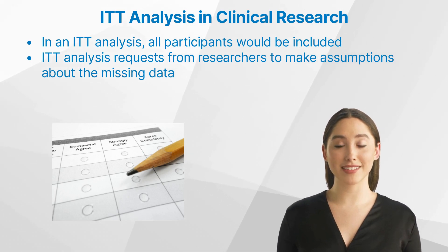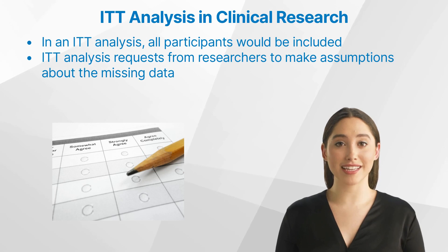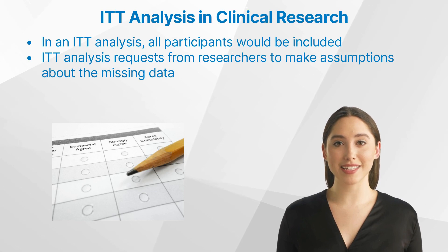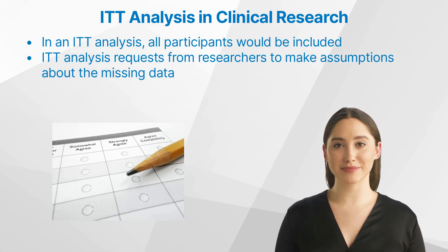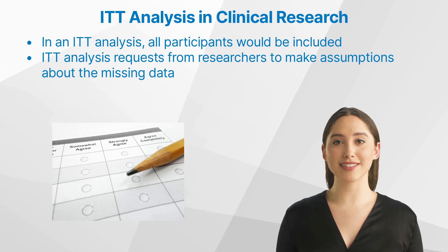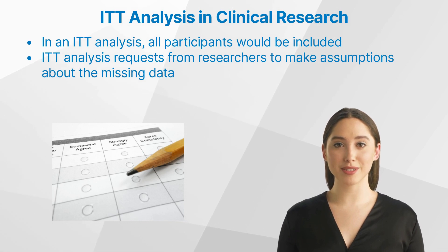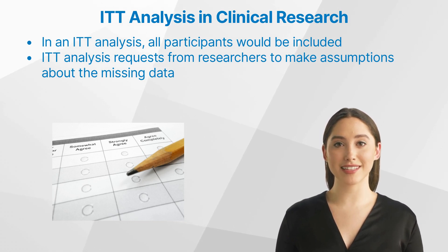In cases where some data is missing, ITT analysis requires researchers to make assumptions about the missing data and include it in the analysis. For example, if a participant drops out of the study and does not complete the survey, an ITT analysis would assume that their depression score did not improve and include this in the analysis.